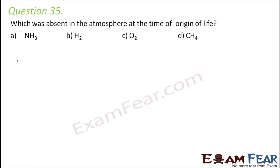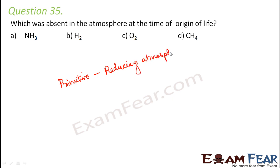Question 35: which was absent in the atmosphere at the time of origin of life? During chemical evolution, simpler molecules were formed first — hydrogen, nitrogen, water, methane, ammonia, carbon dioxide. Because of their presence, the first primitive atmosphere was called the reducing atmosphere, because free oxygen was not present. So oxygen was absent in the atmosphere at the time of origin of life. If you look at the present atmosphere, it has free oxygen and that is why it is called the oxidizing atmosphere.